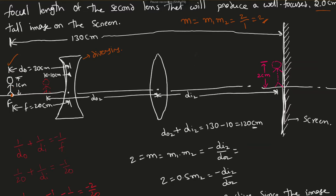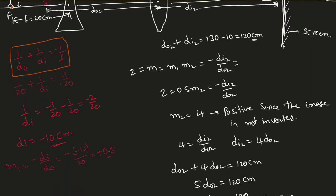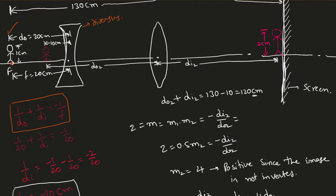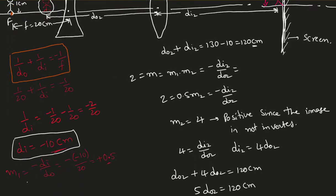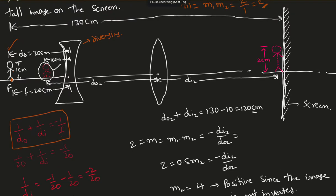I don't know whether the second lens is diverging or converging, so I draw it as converging for now. Using the lens equation for the first diverging lens: 1/D_o + 1/D_i = -1/F (negative because it is a diverging lens with a given negative focal length). I end up with D_i = -10 cm, meaning the image is 10 cm in front of the lens. The magnification M1 = -D_i/D_o = -(-10)/20 = +0.5, so the image is upright and half the size of the object.